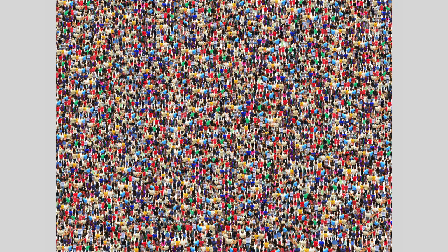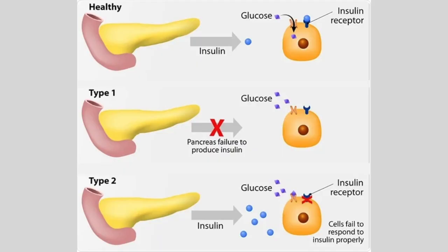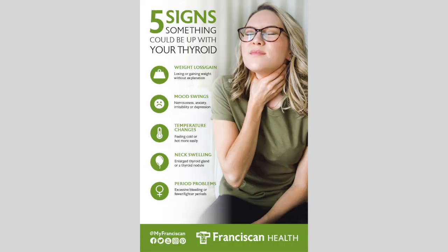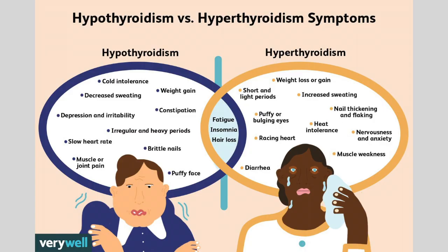The most common endocrine system disorder you guys probably are already familiar with is diabetes. At the very surface level, diabetes happens when the pancreas doesn't create enough insulin or there are problems with the insulin created. Please let me know if you guys want a more in-depth video on the different types of diabetes. The thyroid gland can also have several disorders such as hypothyroidism and hyperthyroidism. Hypothyroidism occurs when the thyroid gland doesn't produce enough hormones, while hyperthyroidism occurs when too many hormones are created, resulting in chemical imbalances in our body.